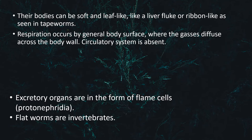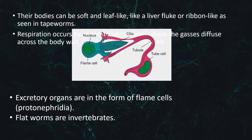Flame cells function like a kidney, removing waste materials. Bundles of flame cells are called protonephridia. Here you can see the structure of the flame cells. Flatworms are invertebrates.